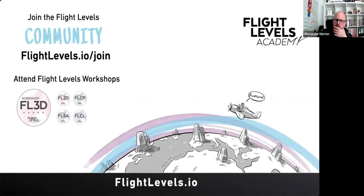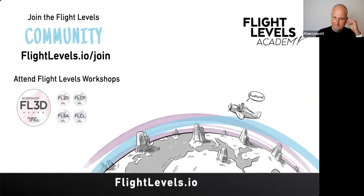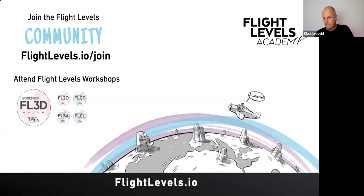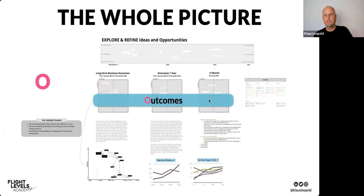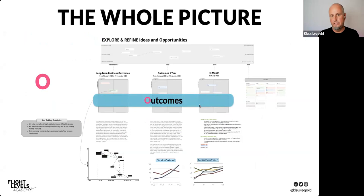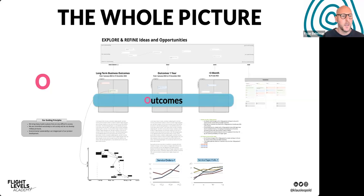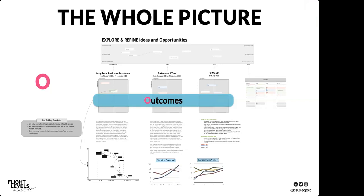From the chat, Christoph asks: to achieve a midterm outcome we need to hire three top engineers within three months — where would you track this initiative? Klaus: if I understand correctly, this would be in the 'next three months' outcomes box — we want to hire these three engineers. Christoph confirms: yes, that's exactly what I wanted to know.